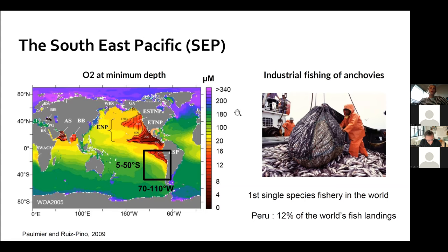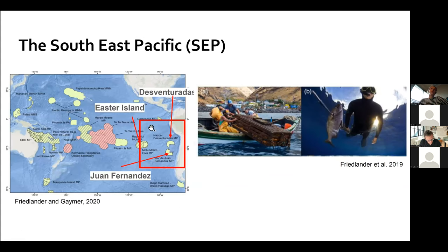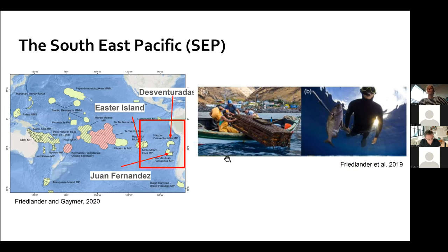Second, the Southeast Pacific also hosts many archipelagos due to the presence of ridges and seamounts: Juan Fernandez, Desventurada, and Easter Island, associated with a network of MPAs shown in green. These archipelagos also have a high level of biodiversity, endemism, and unique ecosystems, but also artisanal fisheries — two examples being the Juan Fernandez lobster fishery and spearfishing in Easter Island.